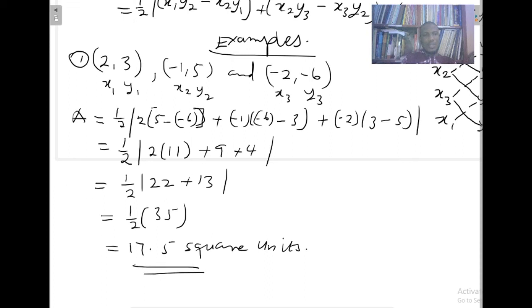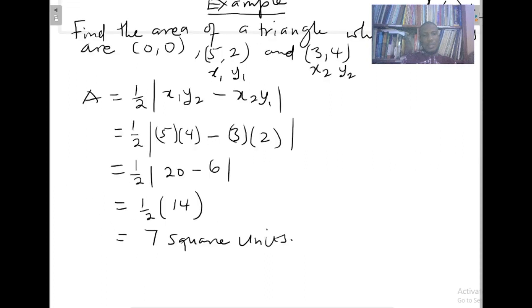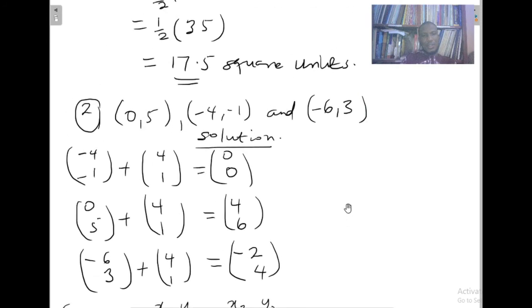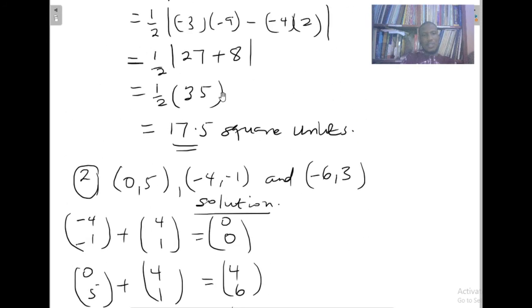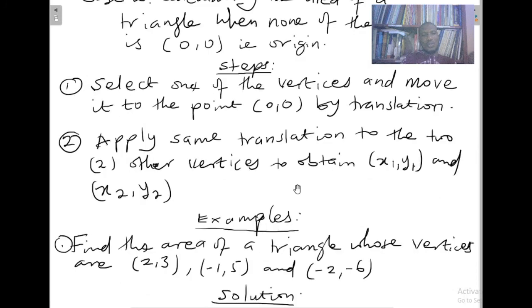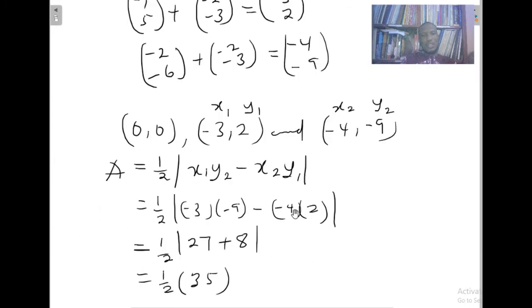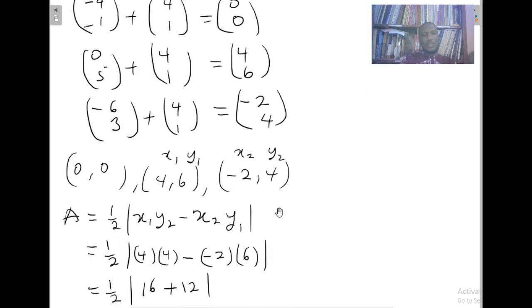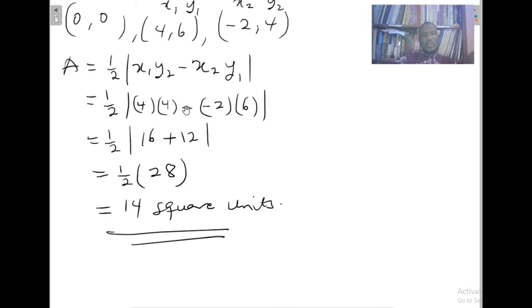You can see that is the same result we got earlier — 17.5 square units — when we solved example one using case two of method one. This shows that any of the two formulas will give us the same thing. We are now going to use the second formula to solve example two, to verify we get 14 square units.